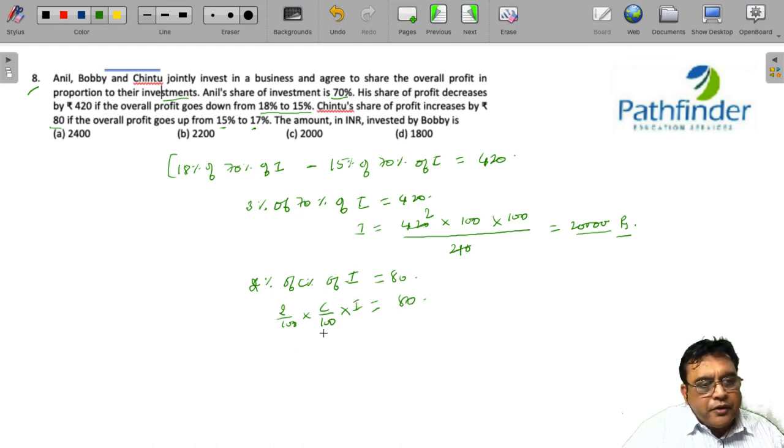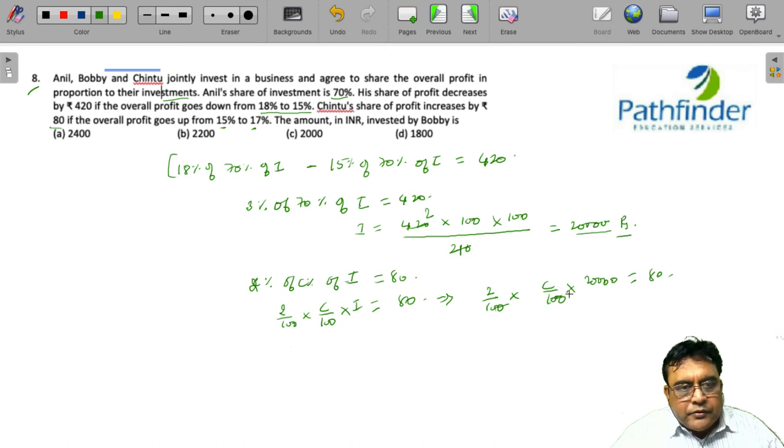We put 20,000 in place of I. So, 2 by 100 into C by 100 into 20,000 must be equal to 80. So, 100, 100 cancels out and we get C is equal to 20%.